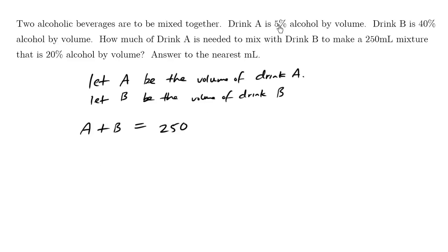Generally, we drop the percentages in front of the variables. So drink A is 5% alcohol. 5%, if we divide it by 100, is 0.05A. We're talking about drink A. And then plus drink B is 40% alcohol. So 0.40B is equal to some amount here.